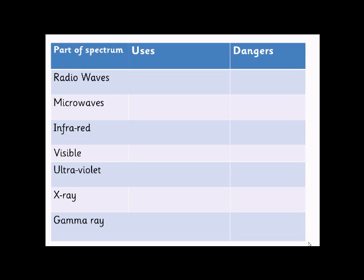The spectrum is made up of seven waves, starting with radio waves which have the longest wavelength, through to gamma rays which have the shortest wavelength but the highest frequency. You need to know the order in terms of wavelength or frequency. Radio waves have the longest wavelength and lowest frequency; gamma rays have the shortest wavelength and highest frequency.